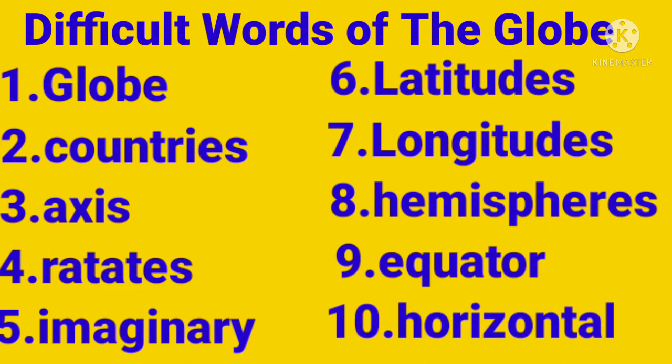Next one is hemispheres, H-E-M-I-S-P-H-E-R-E-S, hemispheres. Next word is equator, E-Q-U-A-T-O-R, equator. Equator is the line which runs in the middle of the globe, that is at 0 degrees, equator.